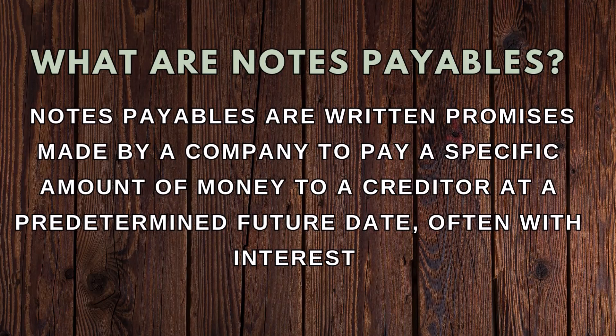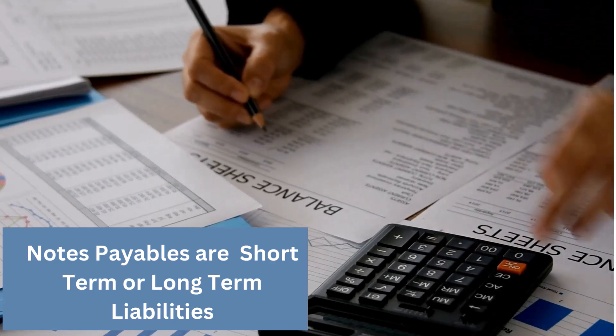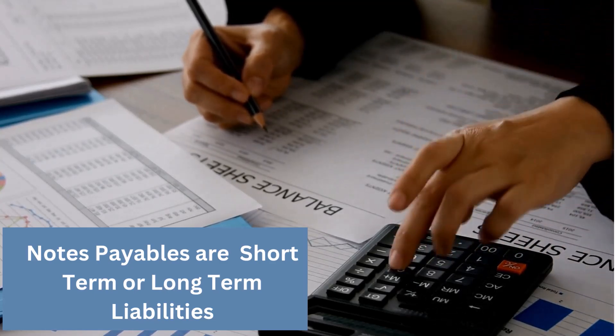One such liability is notes payables. Notes payables are written promises made by a company to pay a specific amount of money to a creditor at a predetermined future date, often with interest. These promissory notes serve as formal contracts detailing the terms of repayment, including the principal amount, the interest rate, and the maturity date. They are classified as liabilities on a company's balance sheet and can be either short-term, due within one year, or long-term, due after one year.